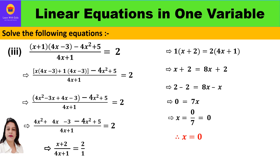Now let us take the third question — it is a very important question because children often make mistakes while solving it, so listen carefully. The equation is: (x plus 1)(4x minus 3) minus 4x² plus 5 upon (4x plus 1) equals 2.